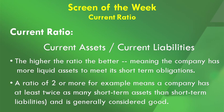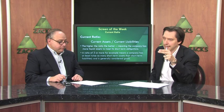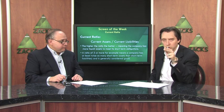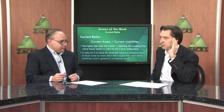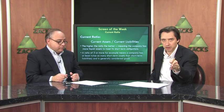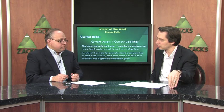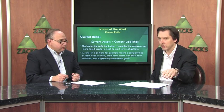A ratio of two or more means the company has at least twice as many short-term assets than short-term liabilities, and this is generally considered good — that's kind of the threshold. The current ratio right now for stocks in the S&P 500 is 2.09. Mid-year it was around 1.75, and at the beginning of the year it was 1.67, so there has been a nice improvement.